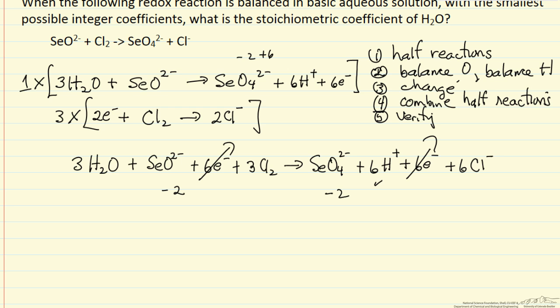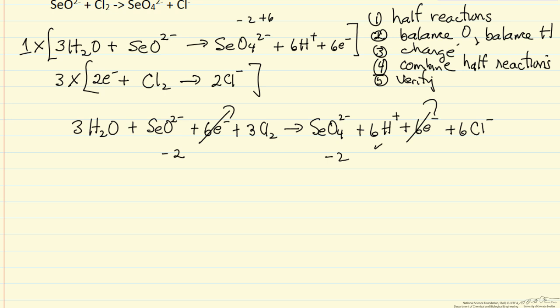Now the final step however, very important one, this is in basic solution. Right now the way it's written is in acidic solution so when it's basic solution there's a sixth step and that's that we add OH minus. So we add OH minus to cancel out the H+ but we have to of course add that to both sides of the equation. So I would add six OH minus here and six OH minus here.